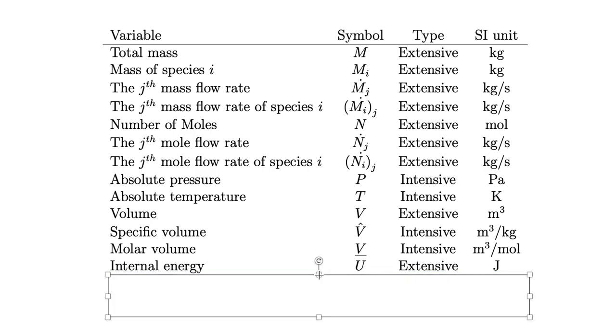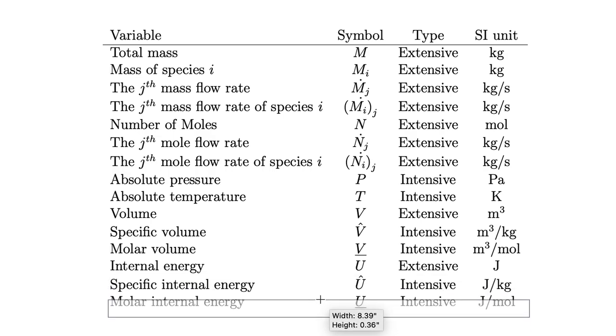For internal energy we'll use the capital letter U, and that would have SI units of joules. We can similarly define specific internal energy and molar internal energy. Specific internal energy is the internal energy per unit mass, which becomes an intensive property with units of joules per kilogram. Similarly we'll use molar internal energy to mean the internal energy per unit mole of a system - we'll represent that by a capital letter U with an underline under it. That would be an intensive property with units of joules per mole.